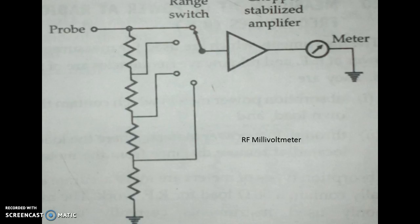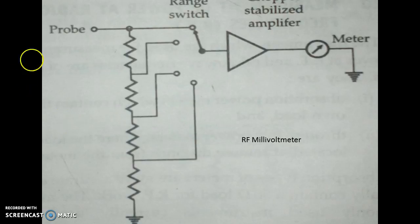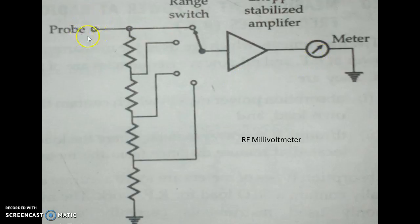Here we have an RF millivoltmeter, which is a device that can be used to measure voltage and power. The voltage received after rectification will be a DC voltage of very low amplitude, in the millivolt range. So we have an amplifier that amplifies this DC voltage, and then a meter that reads the value. The circuit shown here is the extension of ranges circuit, which allows you to change the range of the meter.